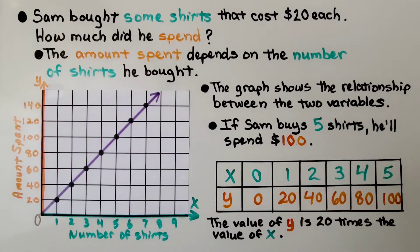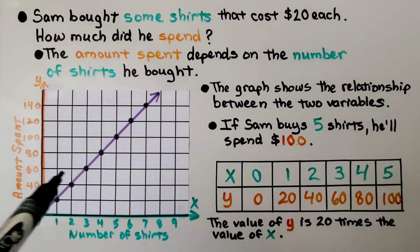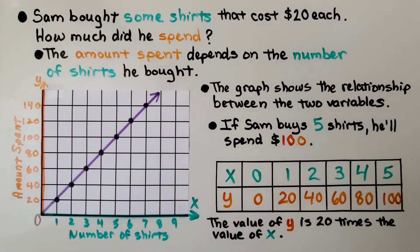Sam bought some shirts that cost $20 each. How much did he spend? The amount spent depends on the number of shirts he bought. Here's the amount he spent, and here would be the number of shirts he bought. If he buys 0 shirts, he spends $0. If he buys 1 shirt, he spends $20. If he buys 2 shirts, he spends $40. If he buys 3 shirts, he spends $60, and so on.